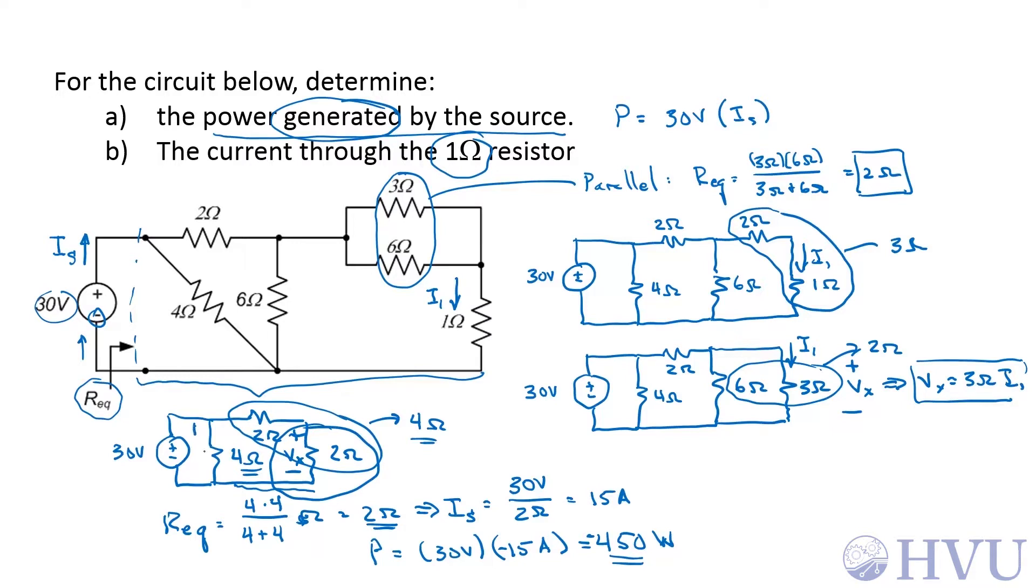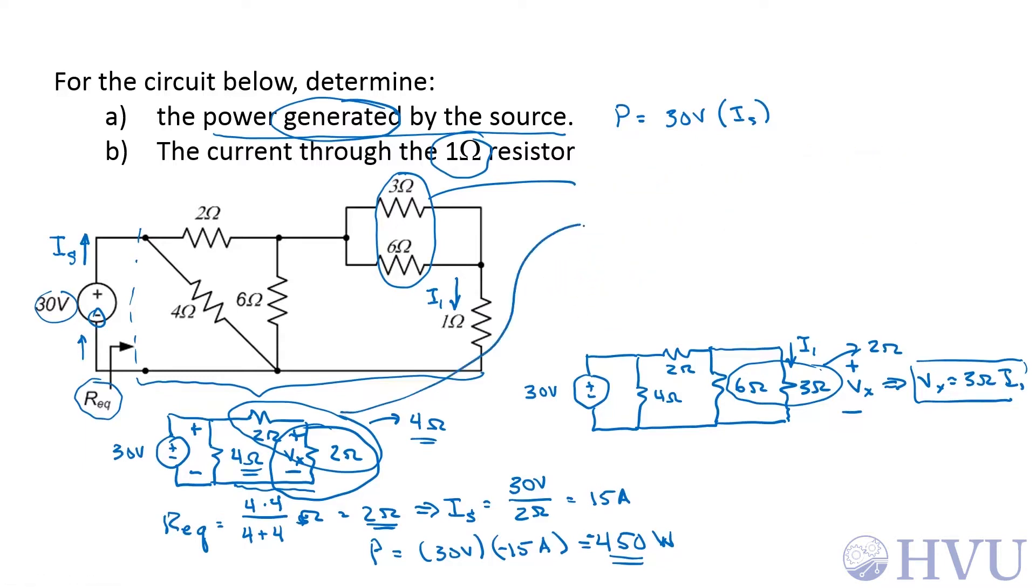Now in this circuit, I know that I have 30 volts across a series combination of two 2 ohm resistors. Let me make myself some more room to work. So from this circuit here, I have 30 volts, 4 ohms, 2 ohms, and 2 ohms, where this is V sub X. It's the voltage across this parallel combination of these two resistors. And I know that this voltage is 30 volts.